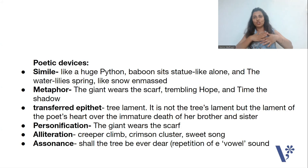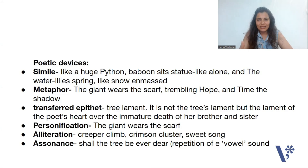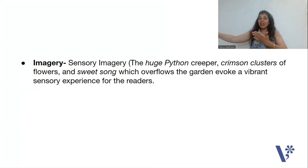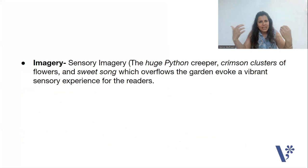Next figure of speech is personification — example: 'the giant wears the scarf,' where the tree is the giant. Next is alliteration — 'creeper climbs,' 'crimson cluster,' 'sweet song.' And last, assonance — there is a repetition of the 'e' vowel sound in the line 'shall the tree be ever dear.' And lastly, we should talk about imagery — very strong sensory imagery. When reading this poem, you can imagine the huge python, the crimson flowers, the coquila or nightingale, the water crashing the stones on the beach. The huge python creeper, crimson cluster, sweet song — this all evokes a very vibrant sensory experience for the readers.